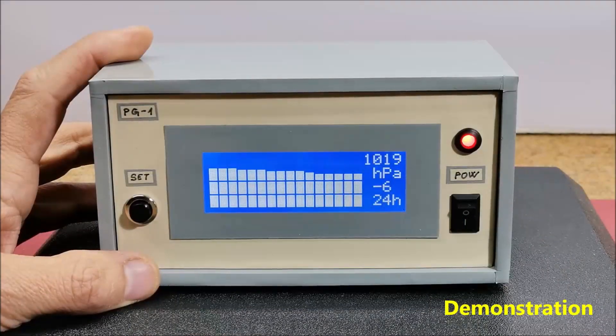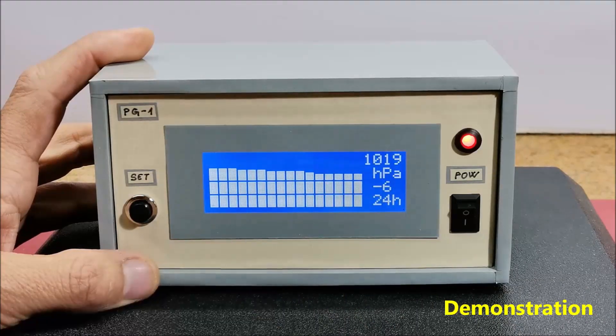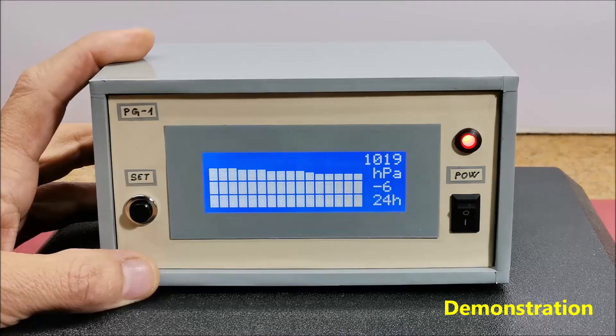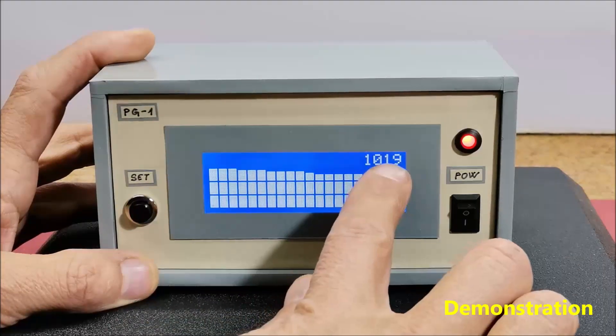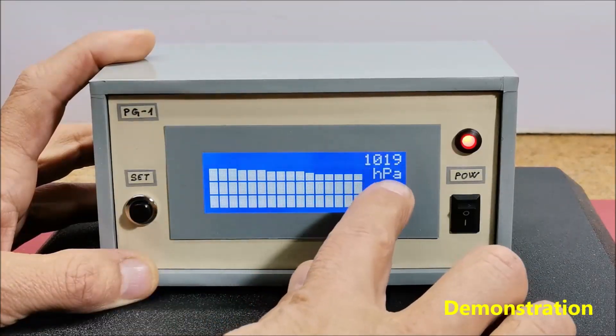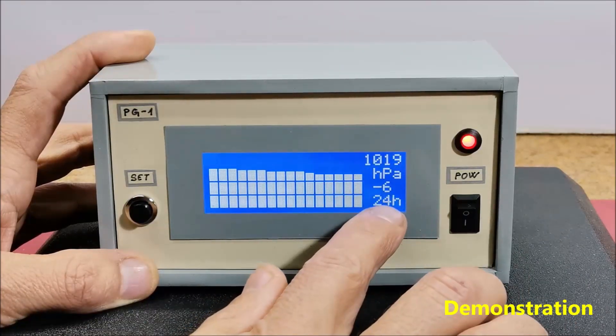Now let's see how the device works in reality. First of all it takes 24 hours to draw a complete graph which in this case is made because the device has been running for several days. The display shows the current relative atmospheric pressure as well as the positive or negative difference in hectopascals for a given previous time period which is also shown below.